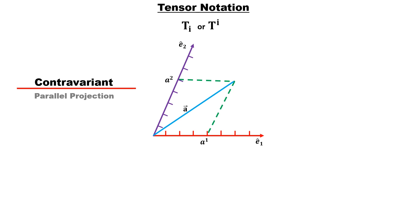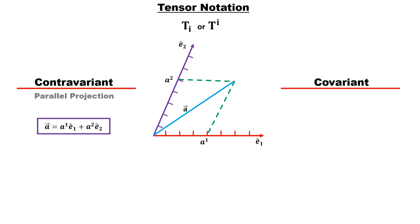In this way, if the vector is a contravariant vector, it will be represented as a-super-1 times e-sub-1 plus a-super-2 times e-sub-2, where a-super-1 and a-super-2 are the parallel projections of the vector — these are called contravariant components. But if the vector is covariant, then the components are calculated from perpendicular projection. Since the components and basis in covariant vectors transform in the same manner, the indices in its components are written in the same subscript as the basis.